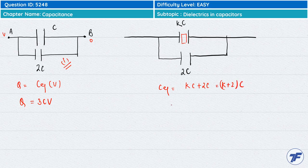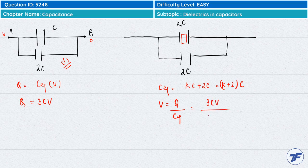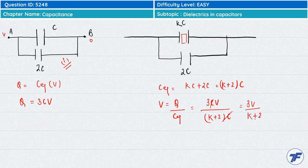So now we want to calculate the potential difference. V is equal to Q divided by C equivalent. Q is 3CV and C equivalent is K plus 2 into C. Now C and C cancel, and it is 3V divided by K plus 2.